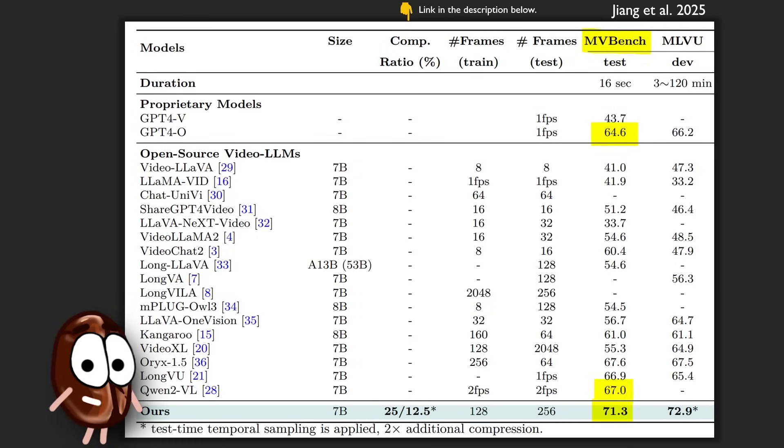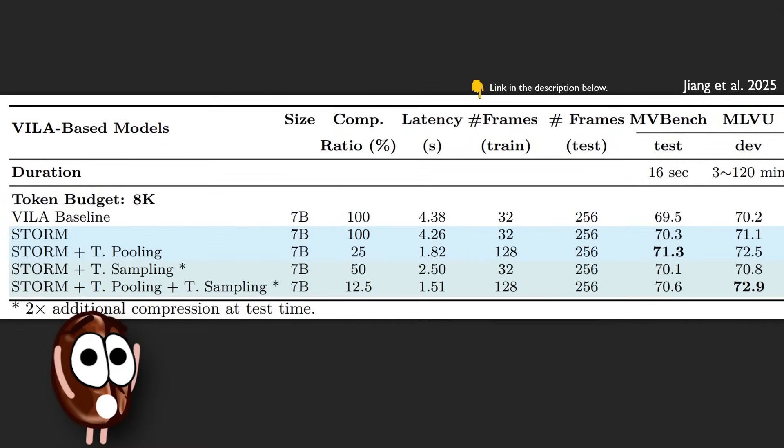But Storm really shines on long video understanding. On MLVU, a benchmark that includes videos up to two hours long with both open-ended and multiple choice questions, Storm again outperformed GPT-4 Omni and open source models. And Storm did this while being drastically more efficient than its variant without any compression. Namely, a baseline model like Storm but with no Mamba, no token averaging, and no sampling scored 69.5 on MVBench and 70.2 on MLVU. But Storm, using eight times less video tokens, got even slightly better results.